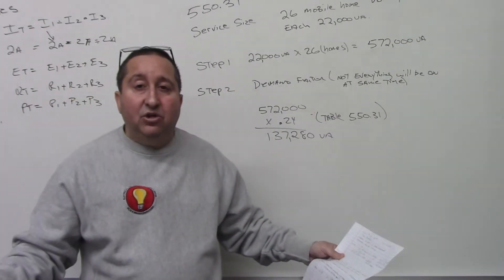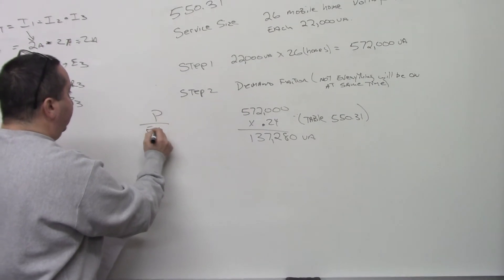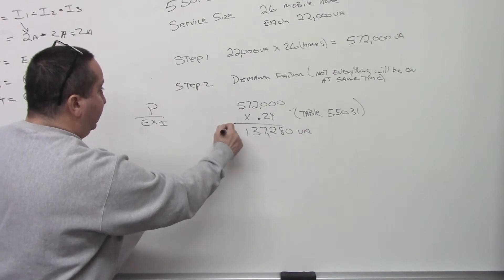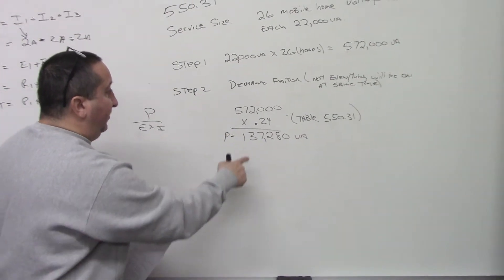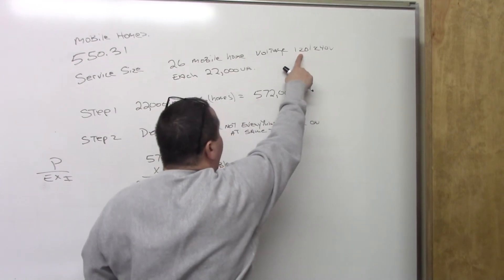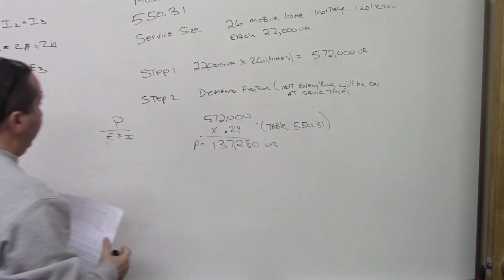And now all you got to do is basic Ohm's law. And here's basic Ohm's law, P equals E times I. We want to find, we got the power, which is volt amps. And we got the voltage, which is 240. You don't use 120. 120 is for the branch circuit. 240 is for the service.